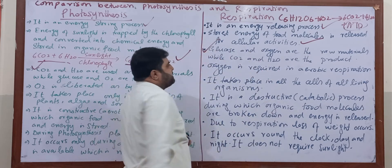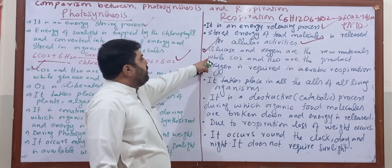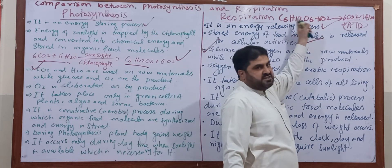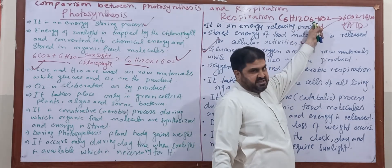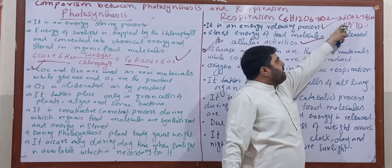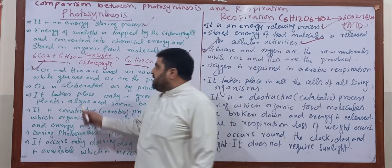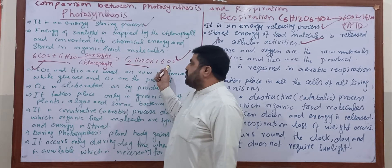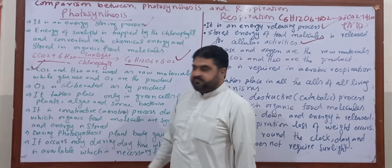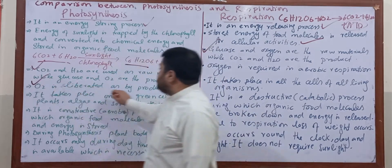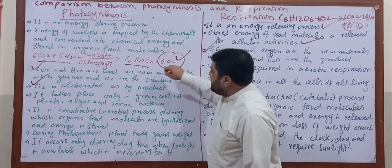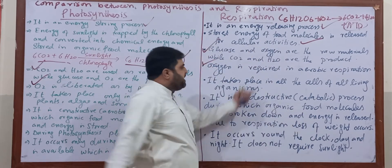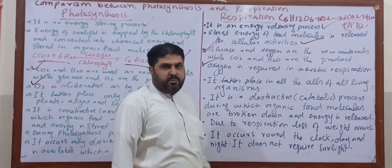In respiration, glucose and oxygen are the raw materials, while carbon dioxide and water are the products. Oxygen is released as a byproduct in photosynthesis, and this oxygen is required in aerobic respiration.